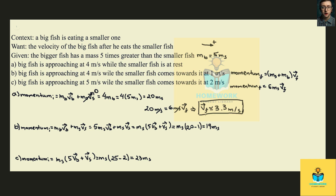For part B, the initial momentum is 19 MS. Setting 19 MS equal to six MS times VF and canceling the MS, we get VF equals 19 divided by 6, which is approximately 3.17 meters per second.